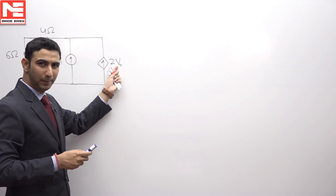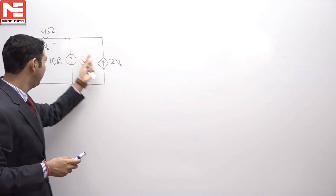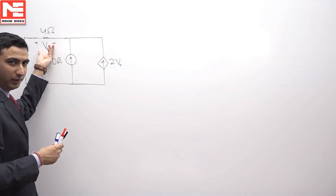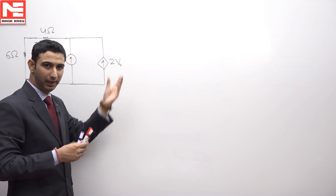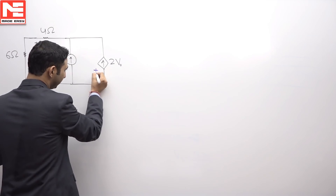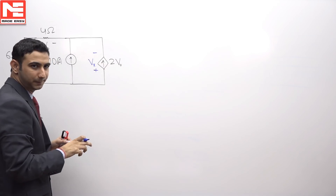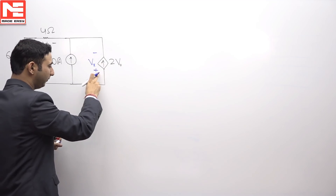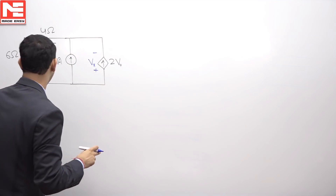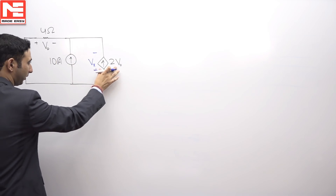The current source is 2V0, so it is a dependent current source which is dependent on the voltage, and voltage V0 is over here. Our first task is to calculate the voltage V0 so that we can calculate 2V0, and then we will calculate the voltage across this one, let us say Vx. The product of this current and voltage will give us the power absorbed by this dependent source.